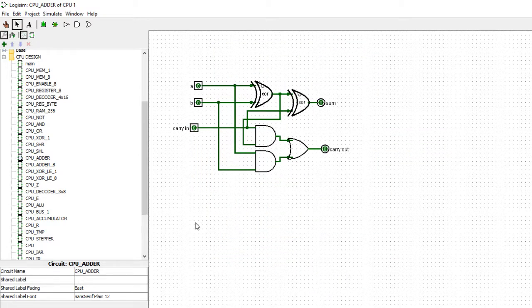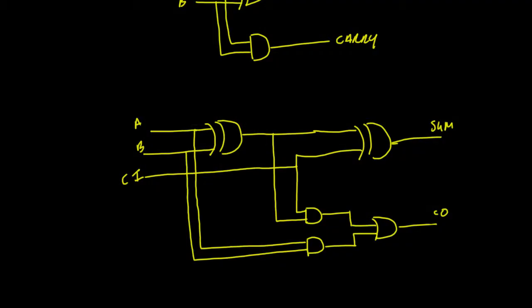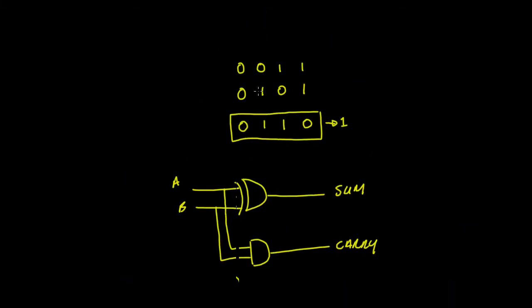That's a typical full adder — let's quickly go through it. To add two one-bit numbers there are four cases: 0+0=0, 0+1=1, 1+0=1, and 1+1=0 with a carry of 1 into the next most significant bit. Looking at this truth table you can see it's the truth table for an exclusive OR, so XOR-ing both inputs gives you the sum.